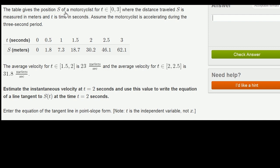The table gives the position s of a motorcyclist for t between 0 and 3, including 0 and 3. This is just saying that t is part of the interval between 0 and 3, and we see that right over here. The distance traveled s is measured in meters, and t is time in seconds.